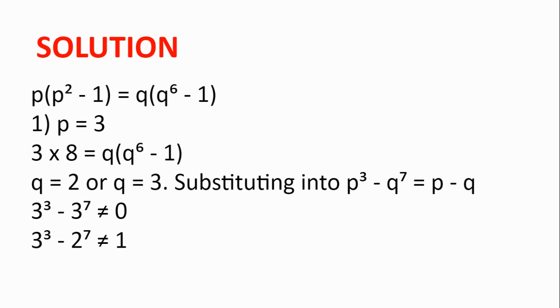Substituting these values into the equation, we get 3³ - 3⁷ ≠ 0, which we know is false because it's negative. And the second one is 3³ - 2⁷, which again is less than 1. So also false and so there are no solutions when p = 3.